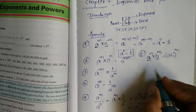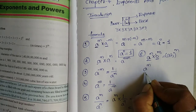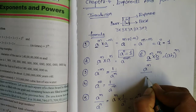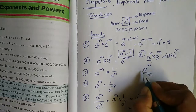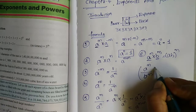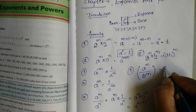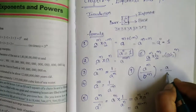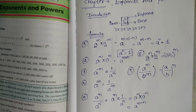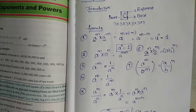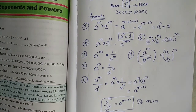The ninth formula: a to the power of m divided by b to the power of m equals a by b, whole to the power of m. These are 9 formulas and all of them are important and compulsory to remember.